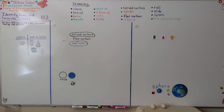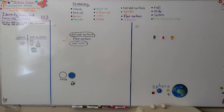So remember, a sphere is like a ball — it has no flat surfaces. In our next lesson, 10.3, we're going to identify, name, and describe cubes. I hope you'll join me there. I hope you have a great day, and I hope you hit the like button. Bye!